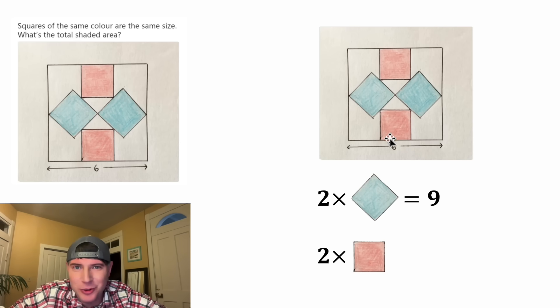And then we can focus on the red squares. Let's label this side S and the base would also be equal to S. And we now know a formula for the area of this square. It would be S squared. And now we got to try to find S.